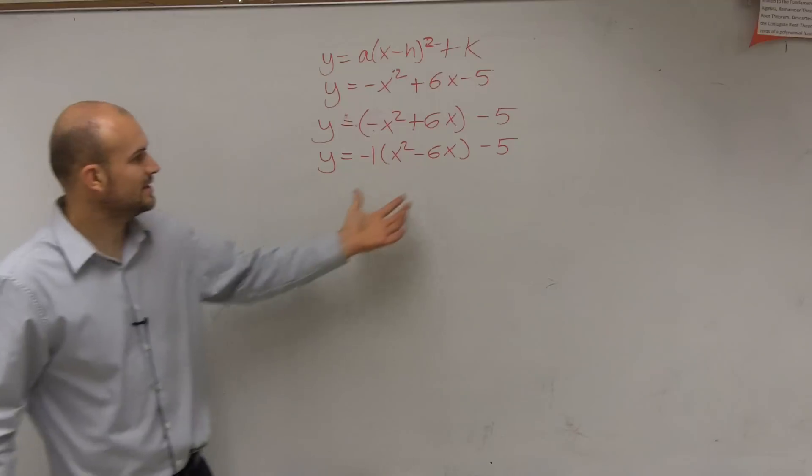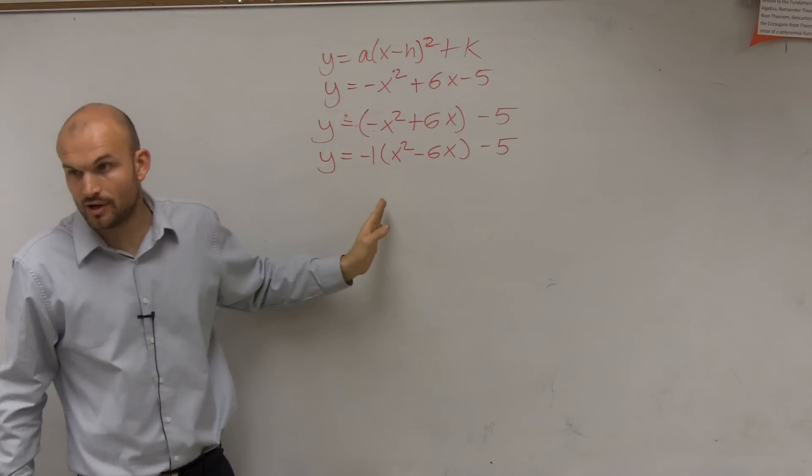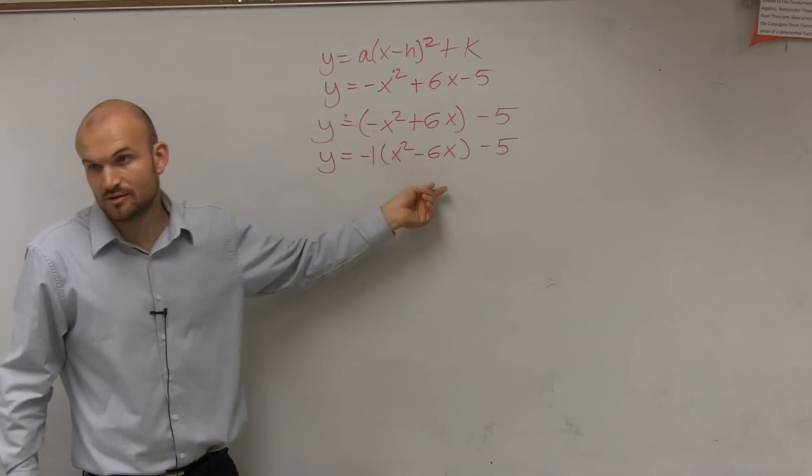Now what we can do is we can complete a square. So we factor out a negative 1. So therefore, my a is going to be negative 1. So now we need to complete the square.